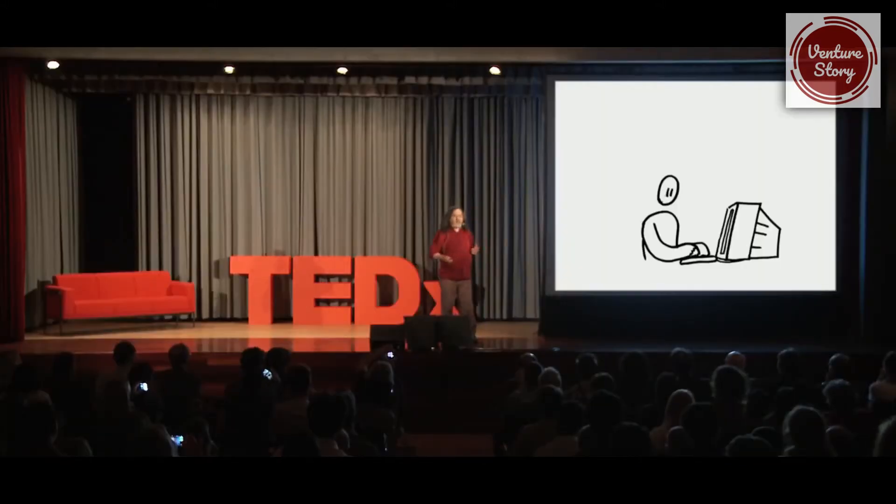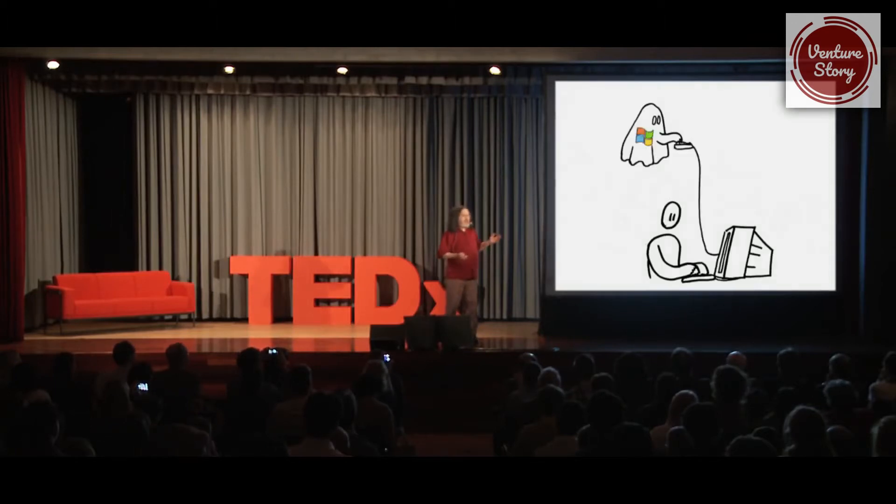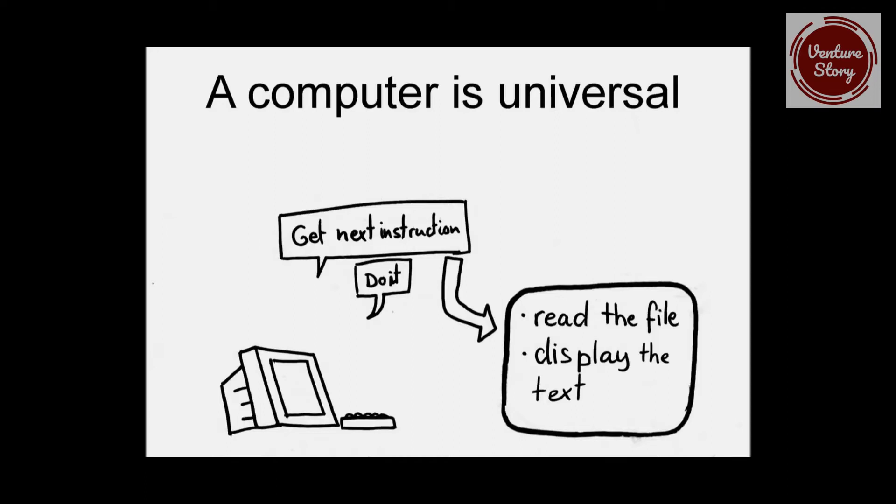Who controls your computer? Is it you or is it some big company that's really controlling it? What is a computer? A computer is a universal machine. It will do any computation you want it to because you give it a program that says what the computation is that you want.